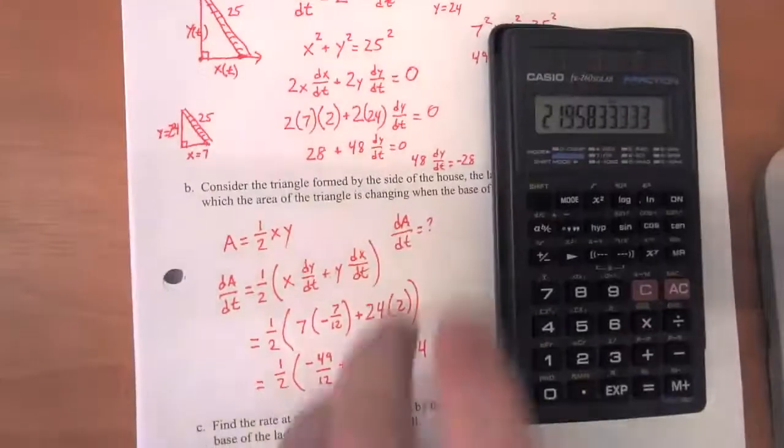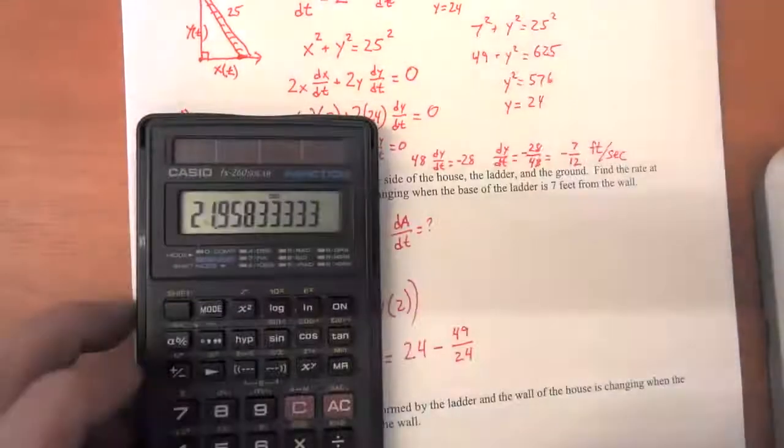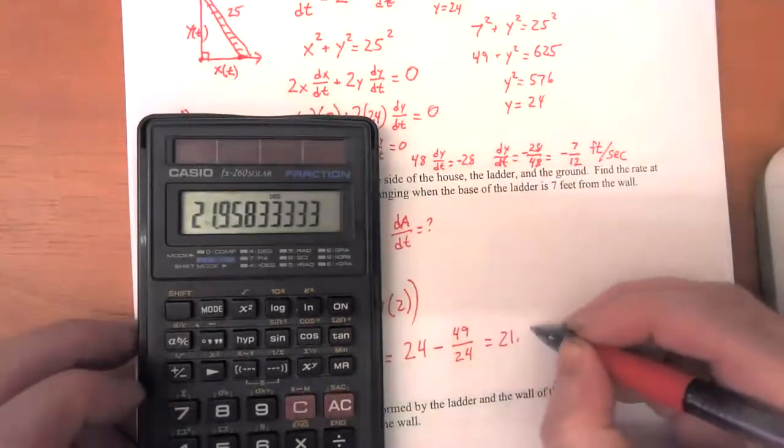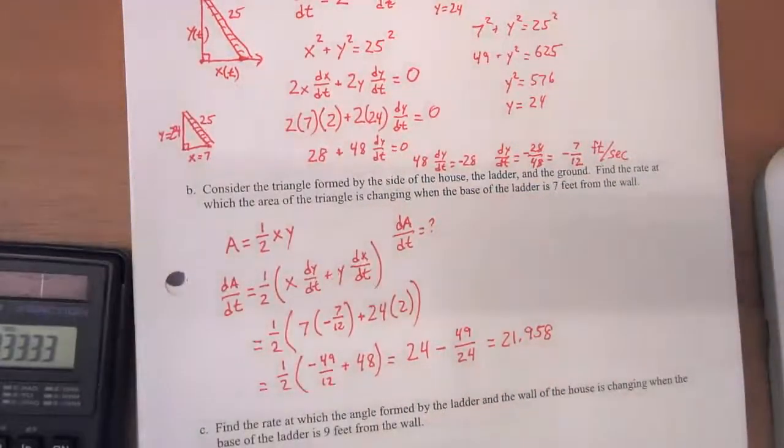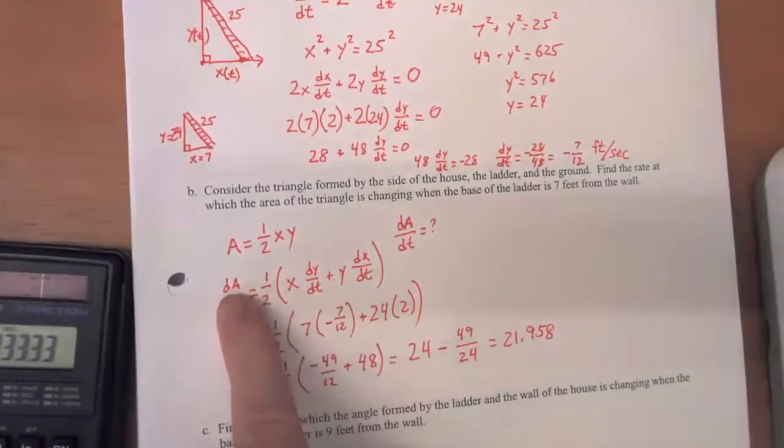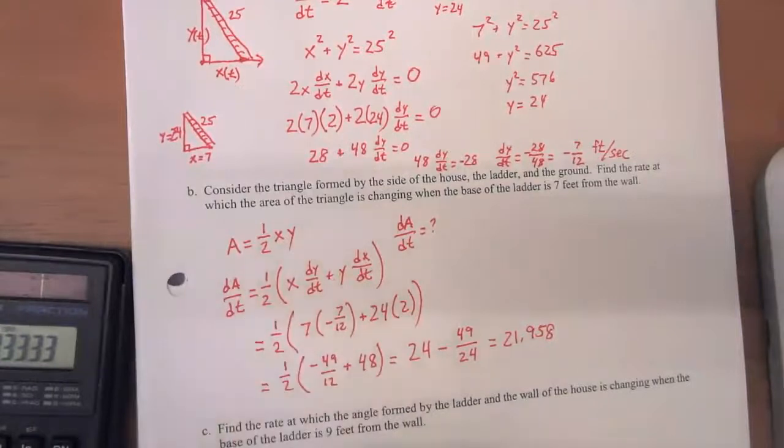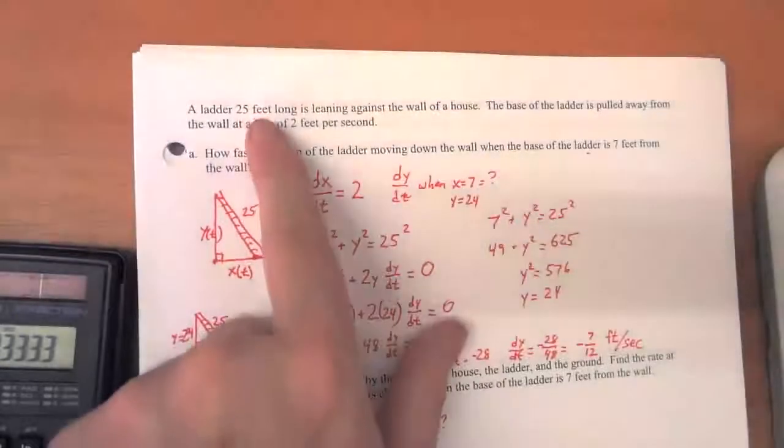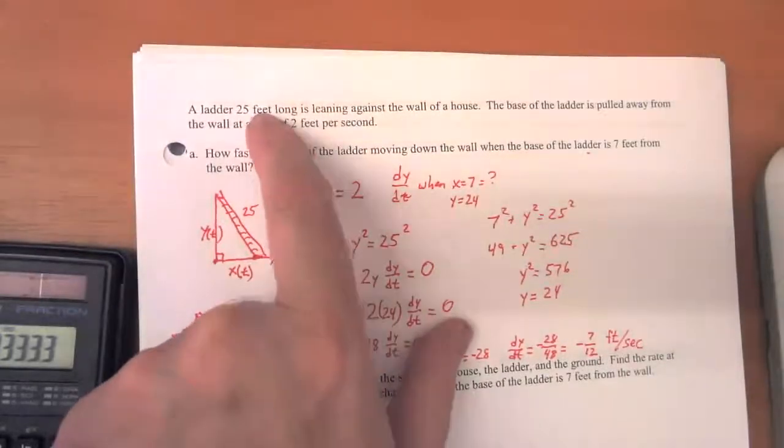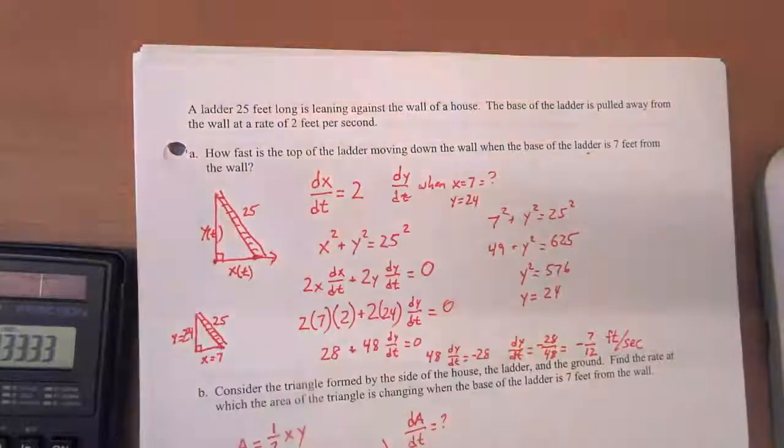And so that's equal to, to three decimal places, that is equal to 21.958. And what's our units for this? To think about our units, we want to go back to the problem and figure out what we're calculating. We're calculating the change in area over time. So what do we measure area in and what do we measure time in in this problem? Well, area is going to be square feet because we're measuring feet times feet. And our unit of time is seconds.